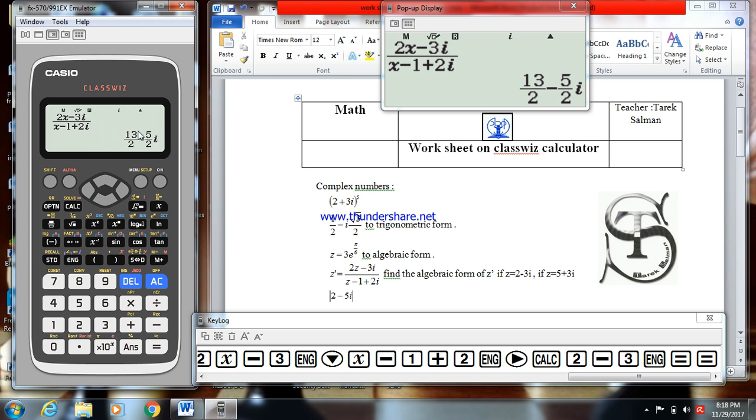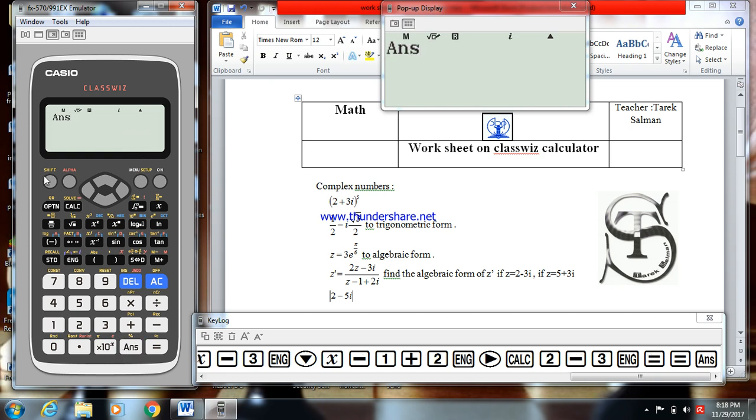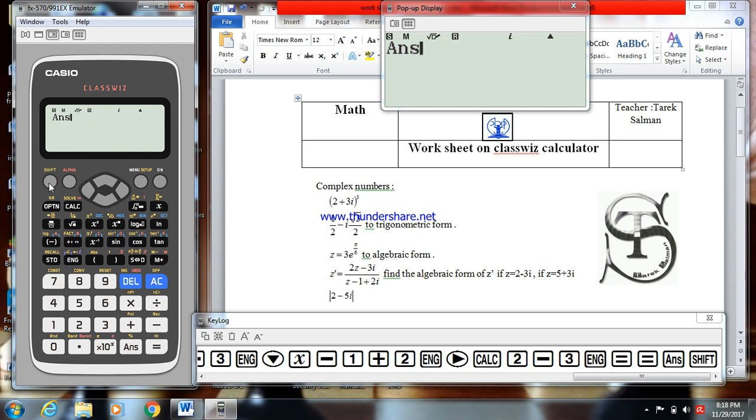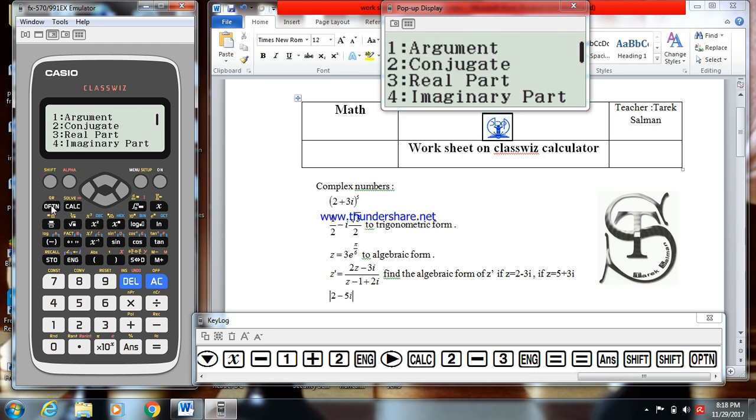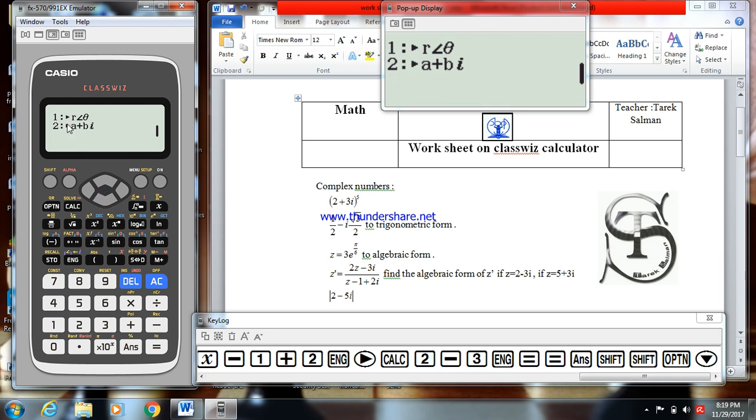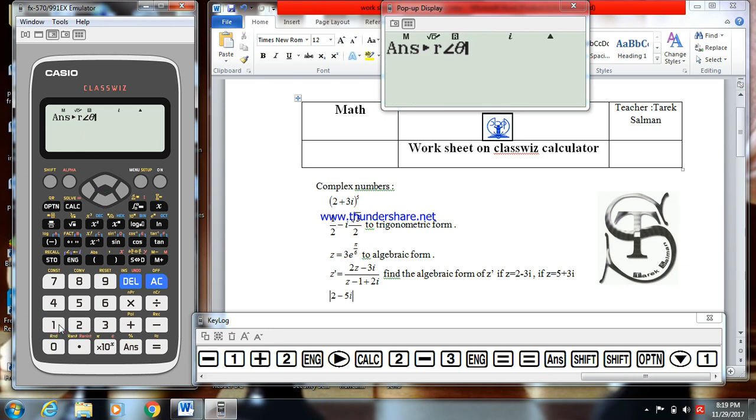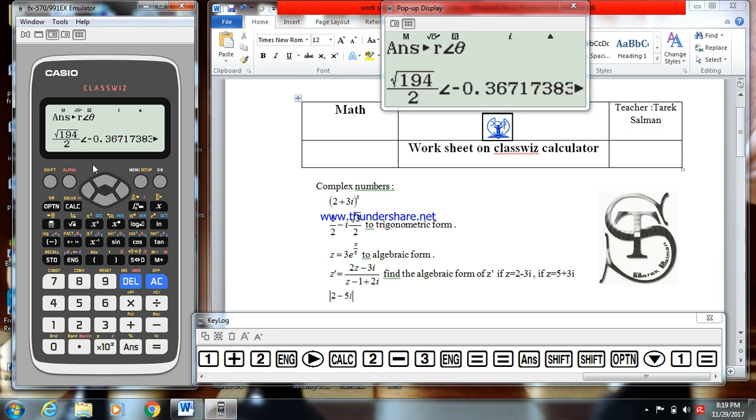In the algebraic form. If I want to transform this one to the trigonometric or exponential form, it's very easy. I put option. I want to say go down, go to r theta, 1, equal. So I transform this one to the trigonometric form. This is the modulus, and this one is the argument in radian.